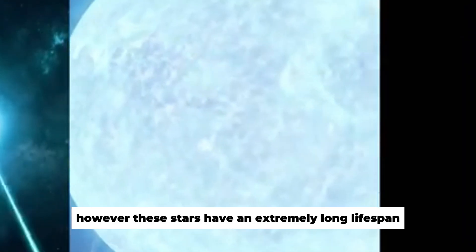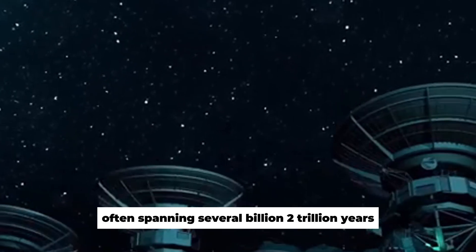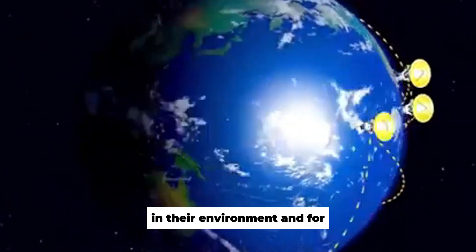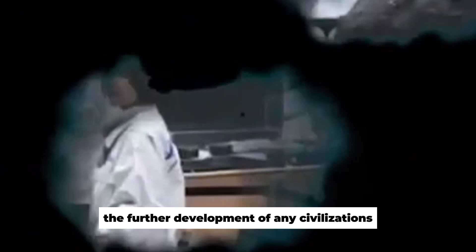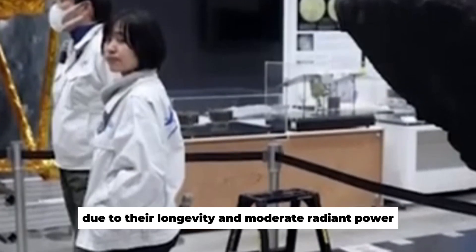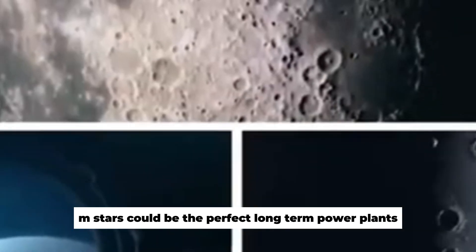However, these stars have an extremely long lifespan, often spanning several billion to trillion years. This makes them almost perfect for the emergence of life in their environment and for the further development of any civilizations living there. Due to their longevity and moderate radiant power, M stars could be the perfect long-term power plants.